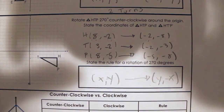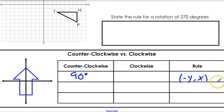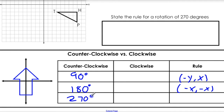That's it for the live lesson. Hope that helped. The final thing: here are our rules. For 90 degrees counterclockwise, the rule is (−y, x). For 180 degrees, it's (−x, −y). And for 270 degrees, the rule is (y, −x). Those are our rules.